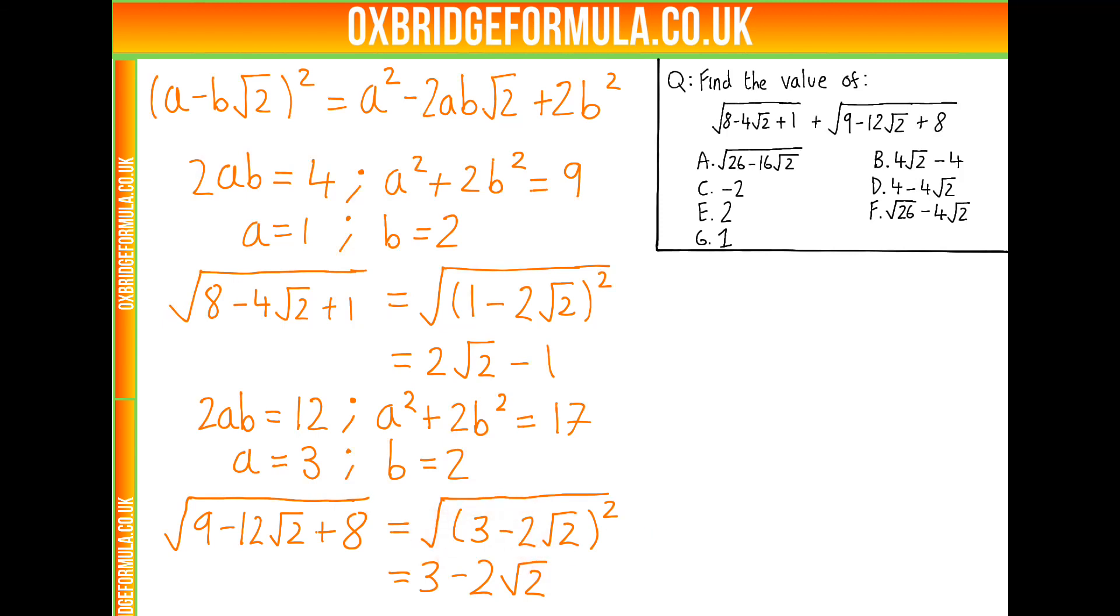And we're almost there, because we've simplified this and simplified this. So let's combine it all. So let's add them up. So we're doing 2 root 2 minus 1 plus 3 minus 2 root 2. And the 2 root 2s cancel, which is very nice, and we get left with 2.